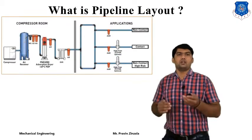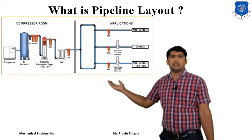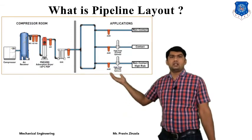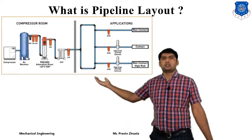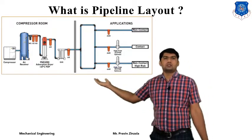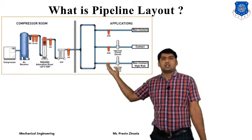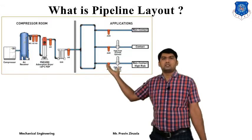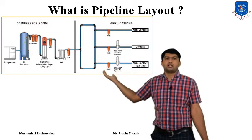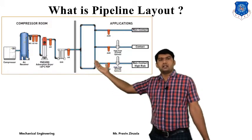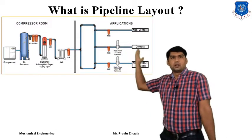Pipeline layout is nothing but the arrangement of pipe according to the requirement. Here is one example of a pneumatic system layout in which we can arrange our pipeline according to the requirement. The first compartment is the compressor room, also called an energy room. The compressor supplies compressed air to the receiver, which then passes it to different components such as the dryer, regulator, or lubricator. Then the final compressed air is passed to different compartments or applications.